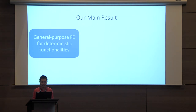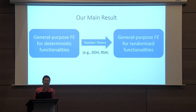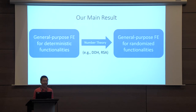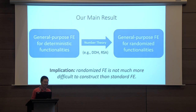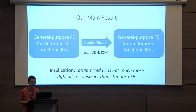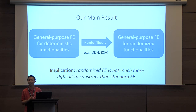In this work, we show that this is not the case. Our main result is that starting from any general-purpose functional encryption scheme for deterministic functionalities, coupled with standard well-studied number-theoretic assumptions — namely the decisional Diffie-Hellman assumption and the RSA problem — we can boost any deterministic FE scheme into an equivalent scheme that supports all randomized functionalities. This shows that randomized functional encryption is not that much harder to construct than deterministic functional encryption, and that applications more naturally captured by randomized FE can generically use a deterministic FE as a starting point.